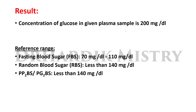The result: the concentration of glucose in the given plasma sample is 200 mg/dL. The reference ranges are: fasting blood sugar (FBS) 70–110 mg/dL, and random blood sugar (RBS) less than 140 mg/dL. Since we obtained 200 mg/dL for random blood sugar, the condition is known as hyperglycemia.